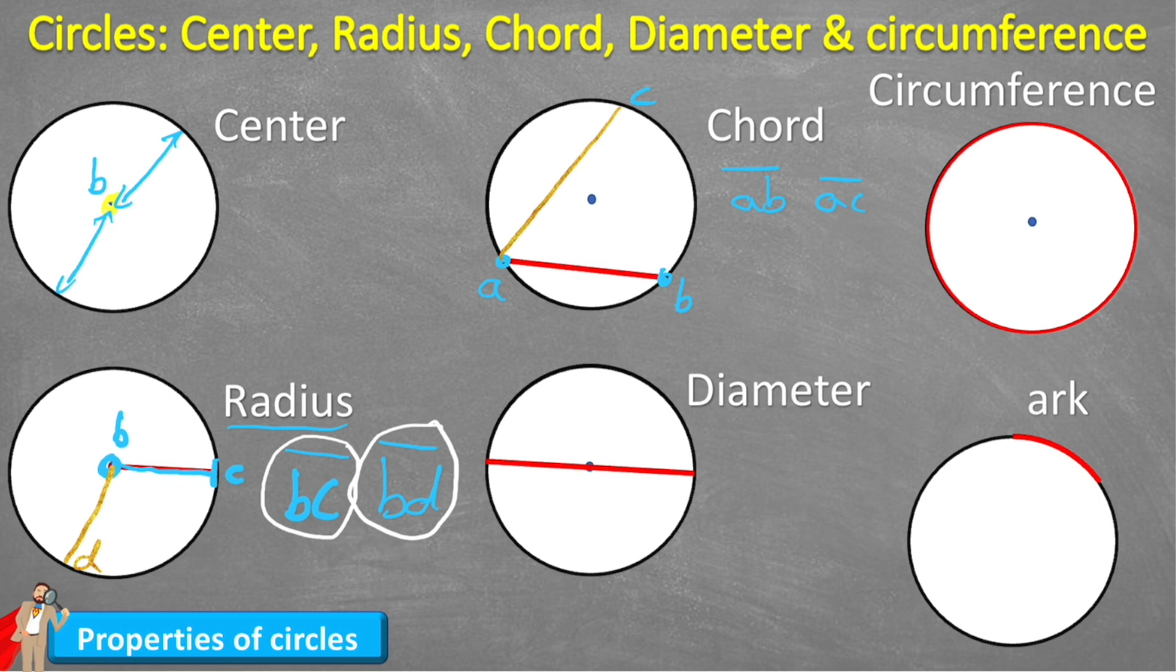That brings me nicely over to my diameter because actually the diameter is also a chord. Because if you think about it it's connecting two points on the edge of my circle. But the diameter has a very important rule. It must go through the center point. And by going through the center point the diameter will actually be the longest chord that you could create.